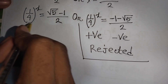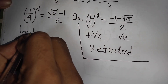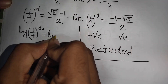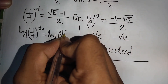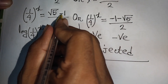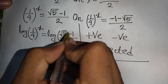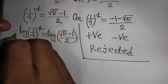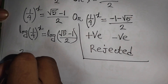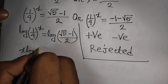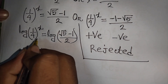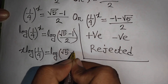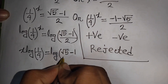From here we take the log of both sides. We write log of (1/4)^x equals log of (√5 minus 1)/2. The power x moves to the front, so x times log(1/4) equals log((√5 minus 1)/2).